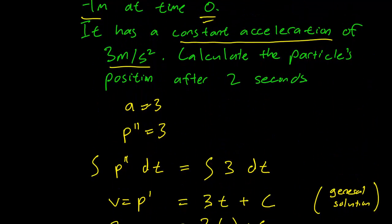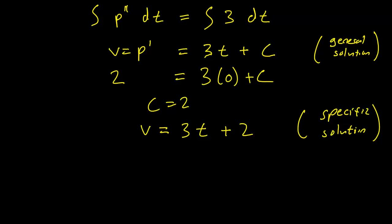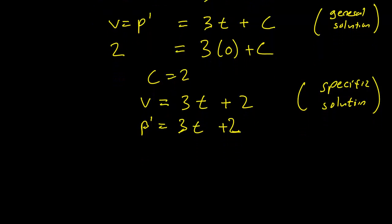But we are asked about the particle's position. So finding the velocity is a first step, but not enough. The velocity is the first derivative, and we need to find the position function. So again, we take the integral.